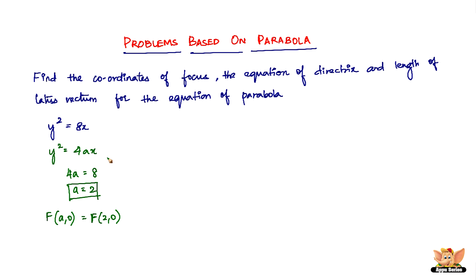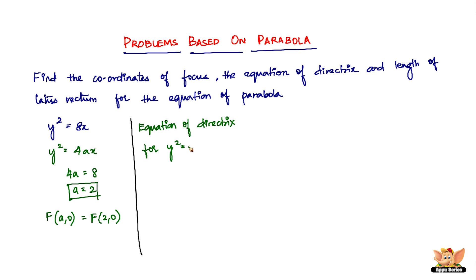Next, we need to find the equation of the directrix. For the form y² = 4ax, the equation of the directrix is given by x = −a. We know the value of a is 2, so the equation of the directrix of the given parabola is x = −2.